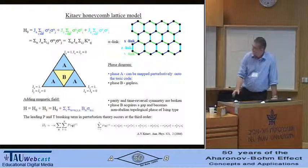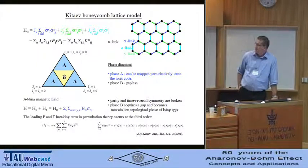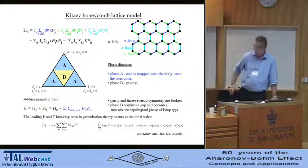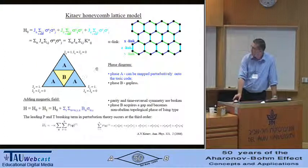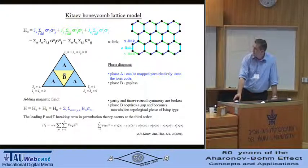Its phase diagram exhibits three different abelian topological phases, which are unitarily equivalent, and a gapless phase. In the presence of a magnetic field, the gapless phase opens a gap and becomes a non-abelian topological phase. The abelian phase is related to double Z2 topological field theories, while the non-abelian phase is described effectively by the Ising-type topological field theories.